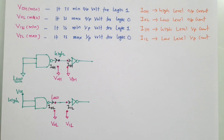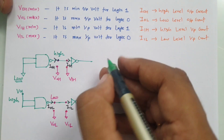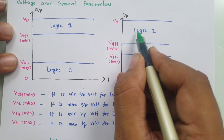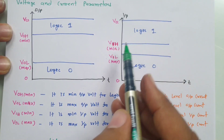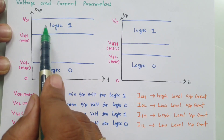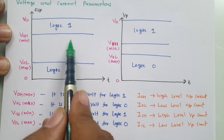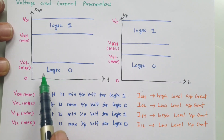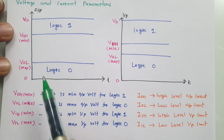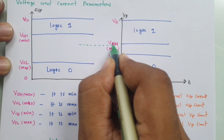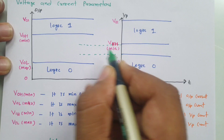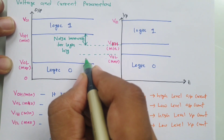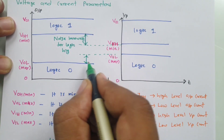Noise immunity of the system is defined by noise margin. If you observe, the logic 1 range at the input is a bit greater compared to the logic 1 range at the output side. Similarly, the logic 0 range at the input is greater compared to the logic 0 range at the output side. Taking these extensions, one can say this is noise immunity for logic high, and this is noise immunity for logic low.